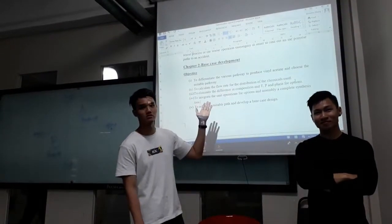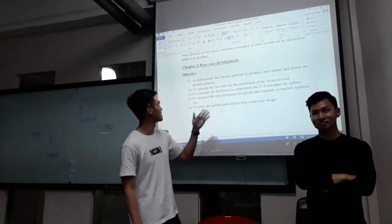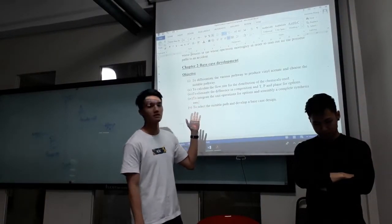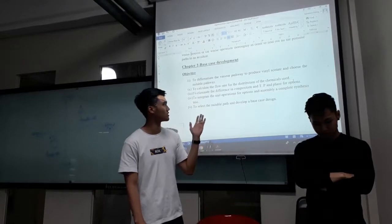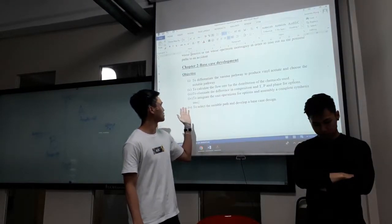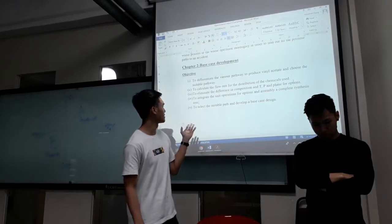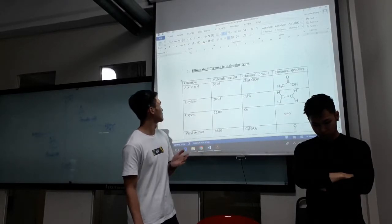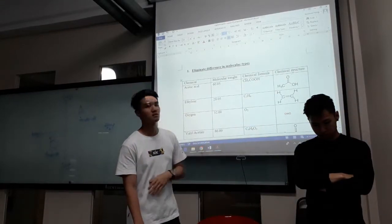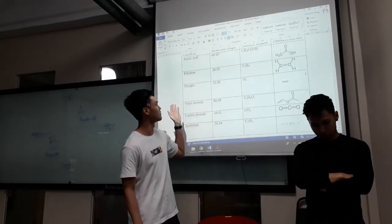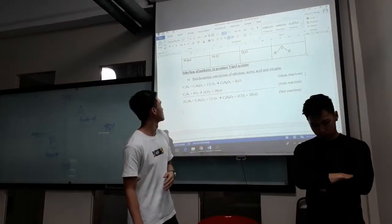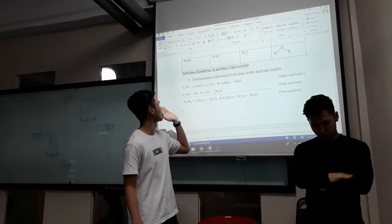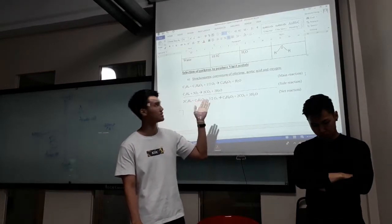The first objective is to differentiate the various pathways to produce vinyl acetate. The second is to calculate the flow rate. The third is to eliminate the difference in composition, temperature, pressure, and phase. The fourth is to evaluate the linear operation, and the final is to choose the suitable pathway. The first pathway is to produce vinyl acetate by using the stoichiometric conversion of ethylene, acetic acid, and oxygen.